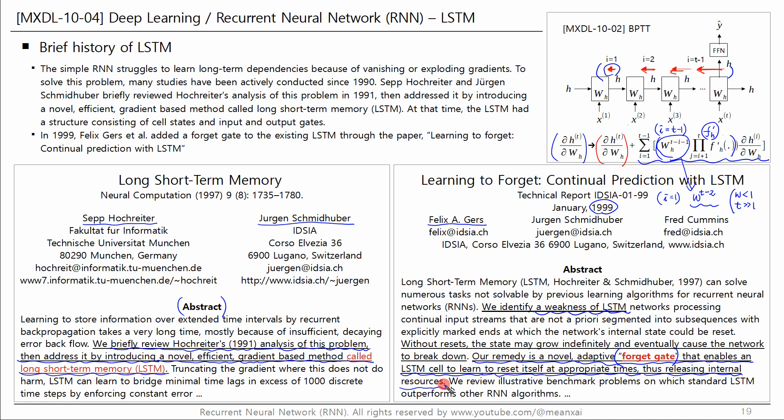The LSTM widely used today is Felix Gers' 1999 version with the addition of a FORGET gate. Since then, many variations of LSTM have been developed — for example, peephole LSTM, GRU, and convolutional LSTM have been proposed. Peephole LSTM and GRU will be discussed in Part 6 of this series, and convolutional LSTM will be discussed later in the CNN series.